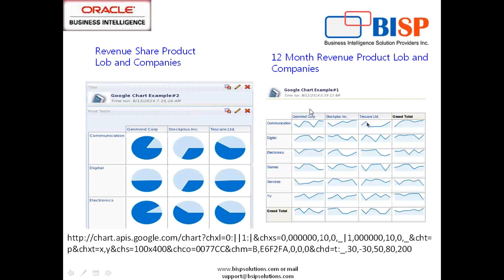Let's see what we're going to design today. We'll take two examples in today's session. In the first example, I'm going to show you how to prepare a pie chart, showing the revenue of different products and companies — the intersection of product and company — and the revenue share for different quarters. In the second example, we use a line chart rendered through Google, passing 12 months revenue for different product lines of business and the company.